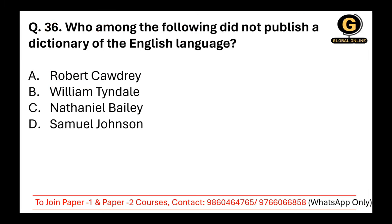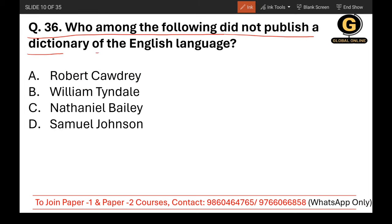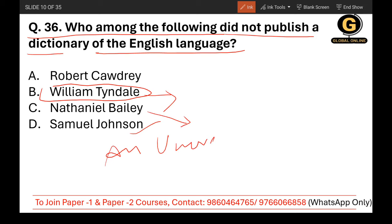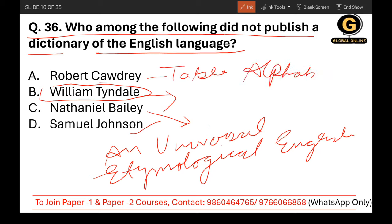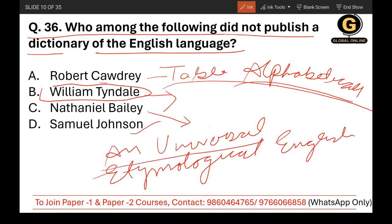Question 36: Who among the following did not publish a dictionary of the English language? William Tyndale is associated with the Bible — Tyndale's Bible. Samuel Johnson wrote A Dictionary of the English Language. Nathan Bailey also wrote a dictionary — the Universal Etymological English Dictionary. Robert Cawdrey wrote A Table Alphabetical, which is the first alphabetical dictionary. So William Tyndale is the correct answer — he did not publish a dictionary.